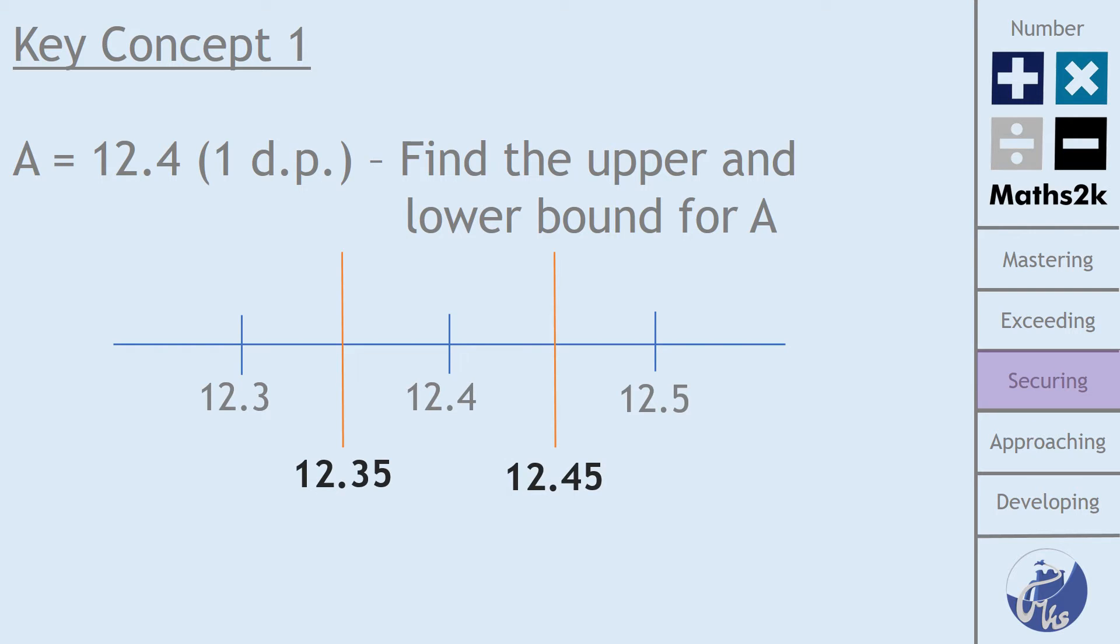Now there will be some who are not quite comfortable with the upper bound being 12.45 because they'll see that as a value that rounds up to 12.5. Now we're not saying the value is 12.45, we're just saying that that is a boundary. That is a point where there would be a change of rounding. And so our values are typically in between and so the best way to show this is with an inequality.